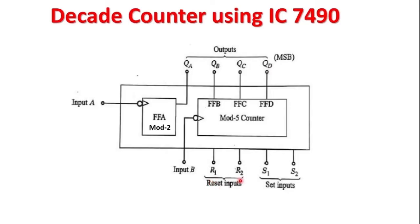Now, what are pins R1 and R2? They are also called R01 and R02 — these are the reset inputs. When they are connected to logic 1, the counter gets reset to 0000. There is one more set of reset pins: S1 and S2, also called R91 and R92. When these pins are connected to logic 1, the counter gets reset to 9, which is 1001. In our case, I neither want to reset the counter to 0 nor to 1001, so I will connect all four of these pins to ground so that they remain inactive.